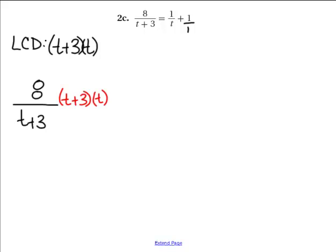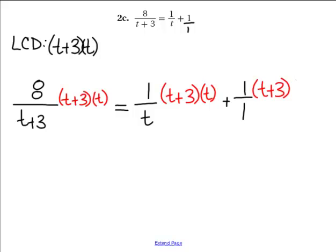And then I have this equal sign, 1 over T, and I'm again going to multiply by my LCD which is T plus 3 times T. And then plus 1. And I'm going to multiply that by T plus 3 times T.